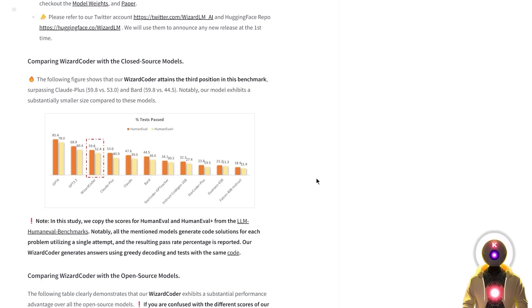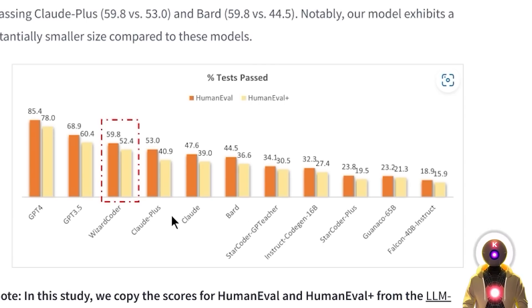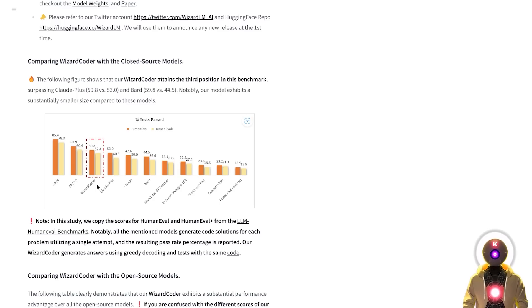When it comes to raw performance, the WizardCoder model actually performed better than a lot of very powerful, famous LLMs like Google Bard or even Anthropic's Claude model. In this particular benchmark, it came third with very similar results to ChatGPT, which is very impressive considering this is a small 15 billion parameter model.